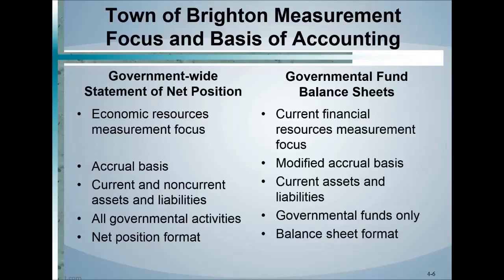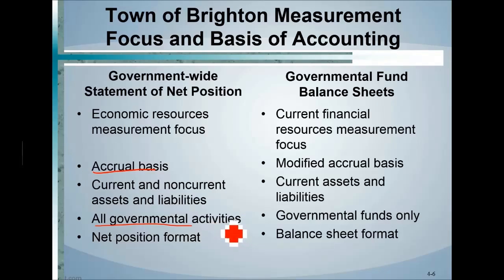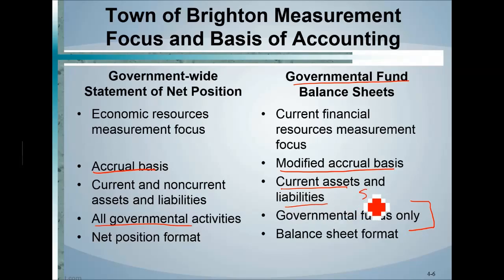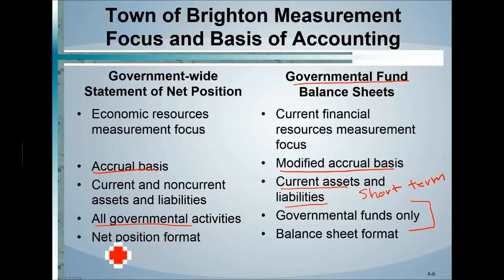For the government-wide transactions, we're using the accrual basis of accounting — it's really long-term and includes all governmental activities. The general fund or fund accounting is going to use modified accrual and will only include governmental funds. It focuses on current assets and liabilities — short-term, really everything within the current fiscal year — whereas government-wide is more than that.